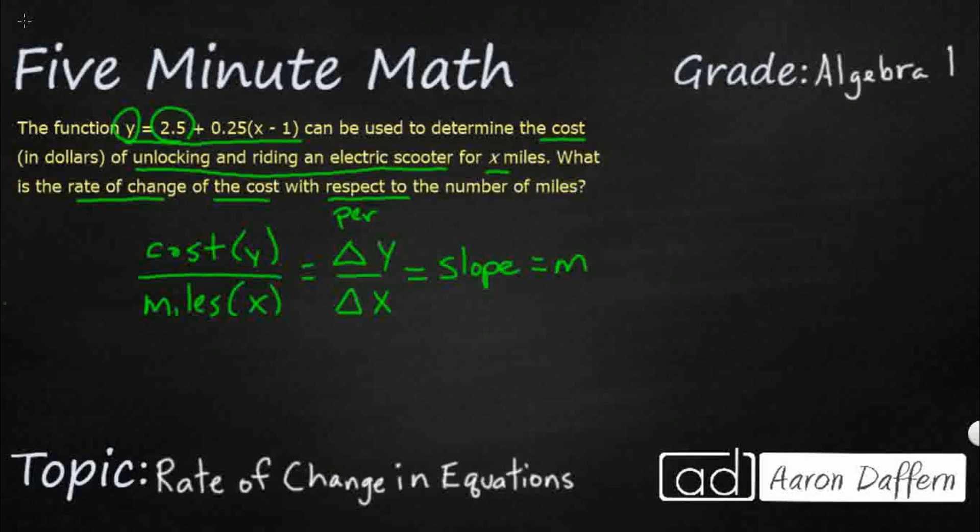And so take a look at this equation. If we wanted to kind of simplify it, we could do this 2.5 plus, and let's just go ahead and distribute out this 0.25.